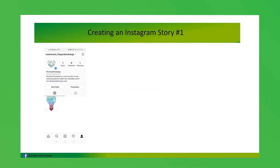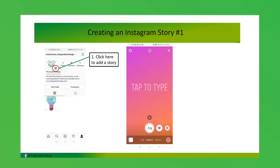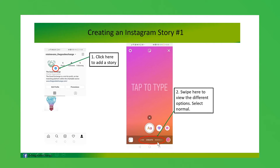You need to go to your account and click on this little cross with the blue background, and this will take you to a page. Here you can swipe across and this will give you different options — I would just go on and have a little play around to see what you can do.